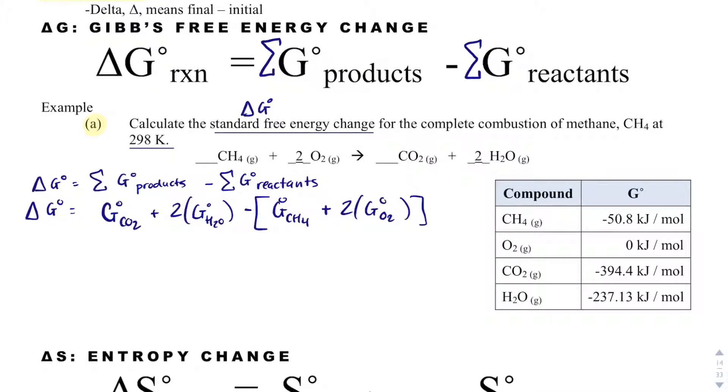So now all I have to do is plug in these numbers. Delta G equals the G of CO2, which is, and I like to cross them off just to know that I've used them, that way I don't accidentally double up when I shouldn't. That is going to be negative 394.4 kilojoules per mole plus 2 times the G of water, which is negative 237.13 kilojoules per mole. I'm going to subtract that from the G of methane, which is negative 50.8 kilojoules per mole. And then I'm going to add that to 2 times the G of O2. And the G of O is 0 kilojoules per mole.